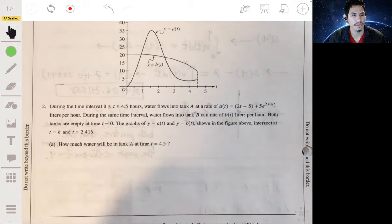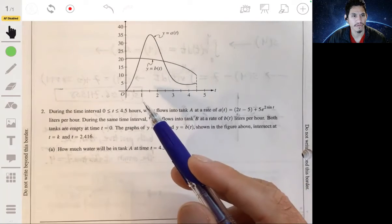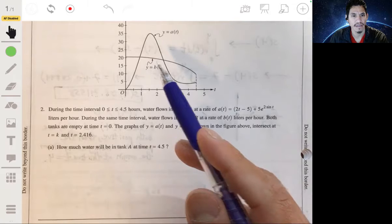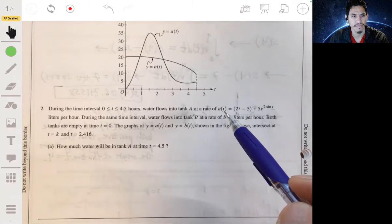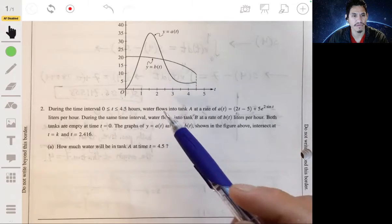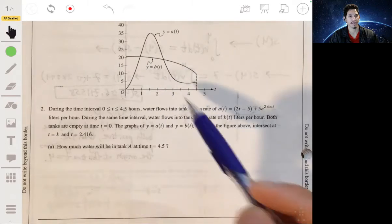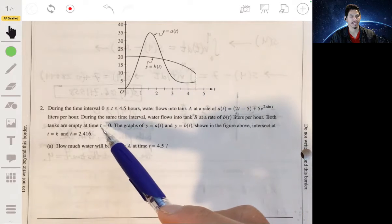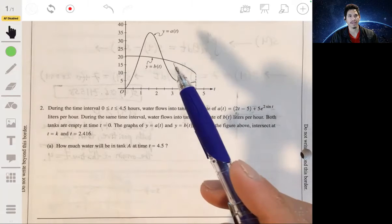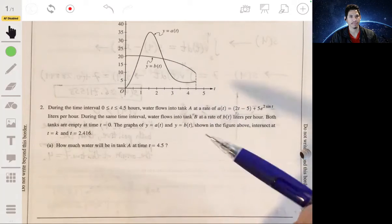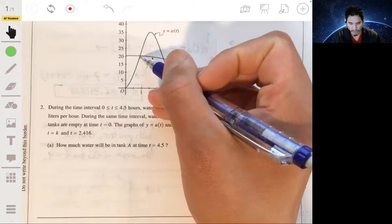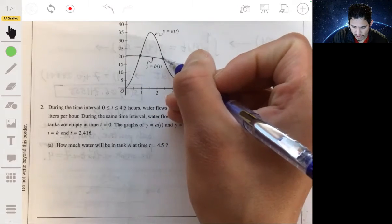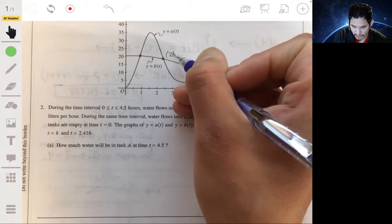Alright, problem two. We got this interval on this graph from 0 to 4.5 hours that shows water flowing into tank A at this rate, A of T. And during this same time interval, water is also flowing into tank B at a rate of B of T. They're both measured in liters per hour. Both of the tanks are empty at T equals 0, and the graphs of A of T and B of T are both shown here. And they intersect at the point here, T equals K, and at T equals 2.416.